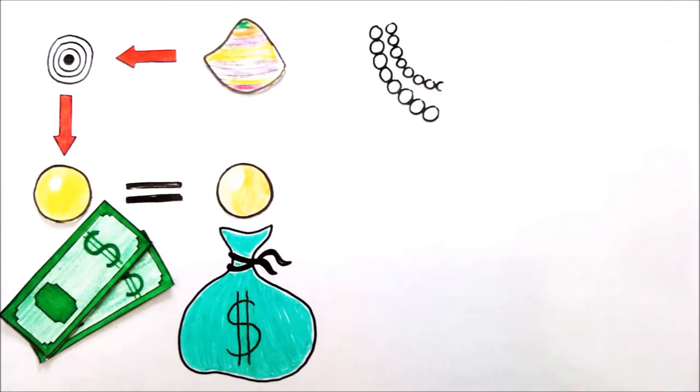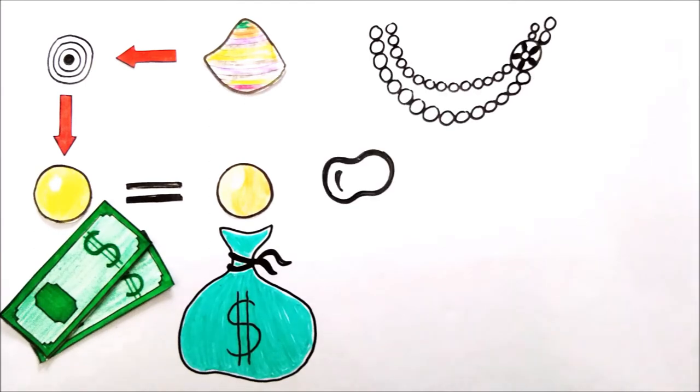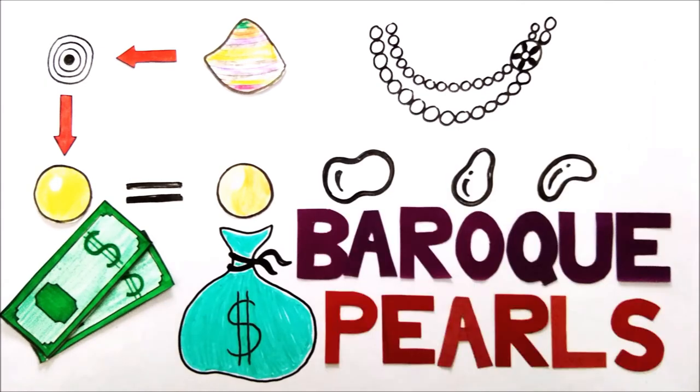Moreover, most pearls that you see in jewelry stores are nicely rounded objects. Some pearls form in an uneven shape. These are called baroque pearls.